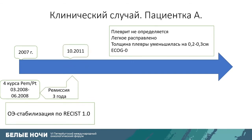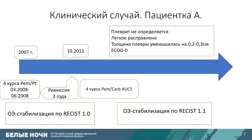The remission lasted three years. Progression occurred in October 2010 with new pleuritis. Given the lengthy remission, we repeated the same treatment but replaced cisplatin with carboplatin. Due to toxicity, only four courses were conducted. After reinduction, we again achieved stabilization according to RECIST 1.1 criteria, which was in use by 2011.